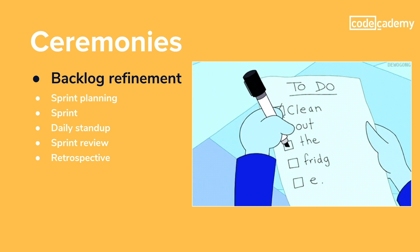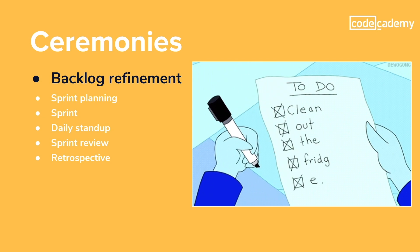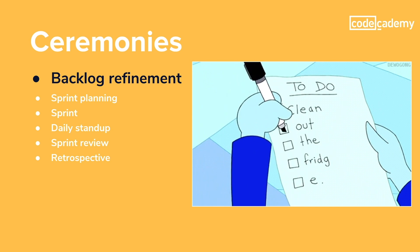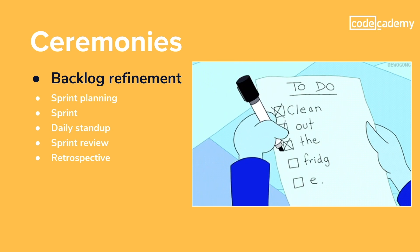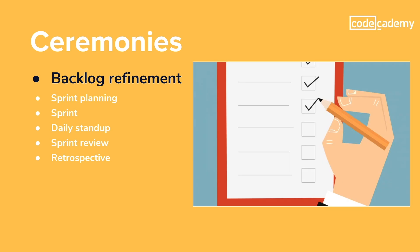During backlog refinement, the product owner will tidy up the team's backlog, which is kind of like a laundry list of things the team needs to complete in order to meet the team's objectives. As the product owner goes through each of the tasks, they'll trim out the ones that are no longer relevant, update the ones that address a change to business need, and prioritize them.